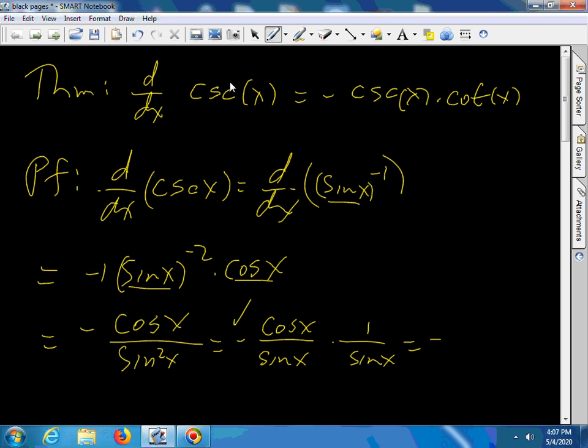The negative is going to stay. Basically, this becomes cotangent x. And one over sine x - that's cosecant x.